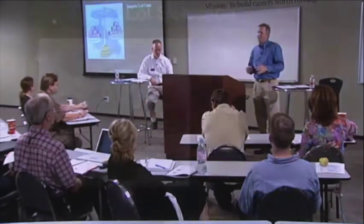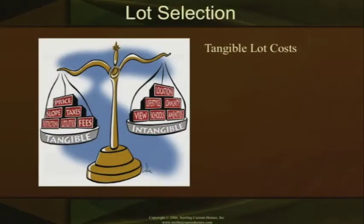Once you've chosen that builder, you begin to go through the lot selection process. We have two different types of lot cost: your tangible cost and your intangible cost.